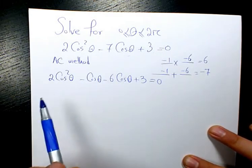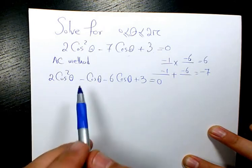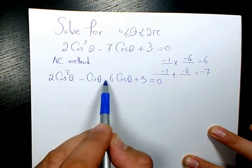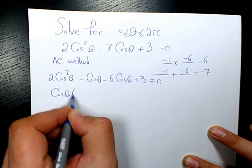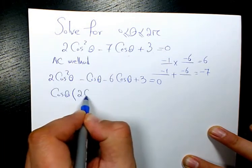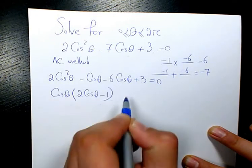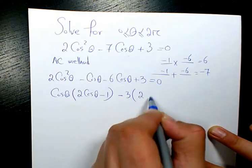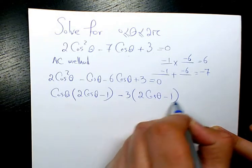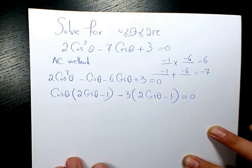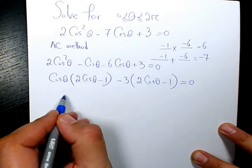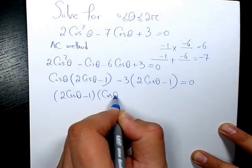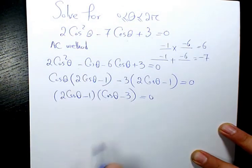So I start with factoring by grouping. So we have 2 cosine squared theta minus cosine theta. I factor out cosine theta. It's going to be 2 cosine theta minus 1. And here I factor out negative 3. It's going to be 2 cosine theta minus 1 equals to 0. Then I factor 2 cosine theta minus 1. And here it will be cosine theta minus 3 equals to 0.